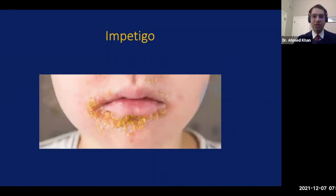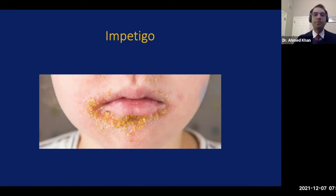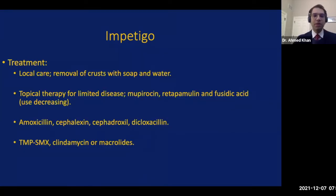Here's a classic picture of impetigo. One can see how it gets the name of honey crusting, as at the lower lip margin we can see the dried-up secretions which have left behind a golden yellow to golden brown residue. Treatment starts with local care — removal of crusts with soap and water — and then topical therapy for limited disease, including mupirocin, retapamulin, or fusidic acid. Fusidic acid use is decreasing because of increasing resistance of these pathogens.